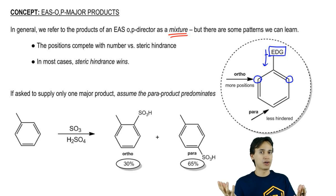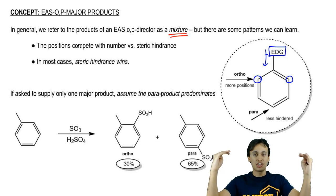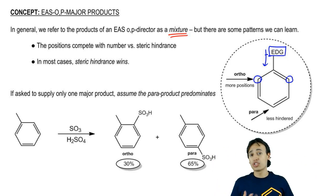The para position, there's only one para, but there's two ortho positions. You might think we're going to get more ortho product because you have twice as many positions that could react. That's one way to think about it.